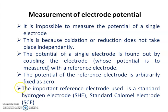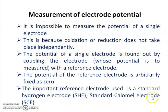Now, what are the important reference electrodes used for measuring electrode potential? There is the Standard Hydrogen Electrode, or SHE, and the Standard Calomel Electrode, or SCE.